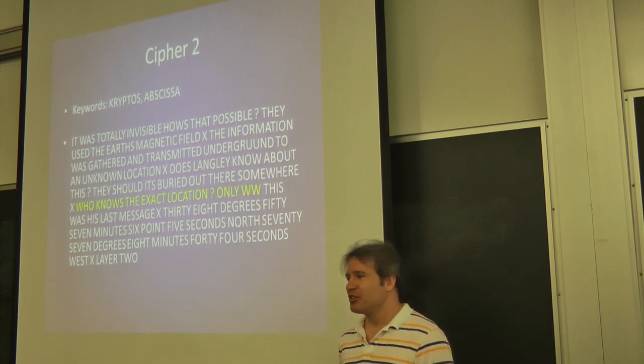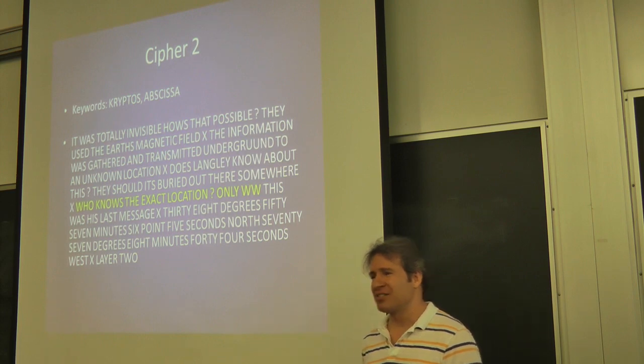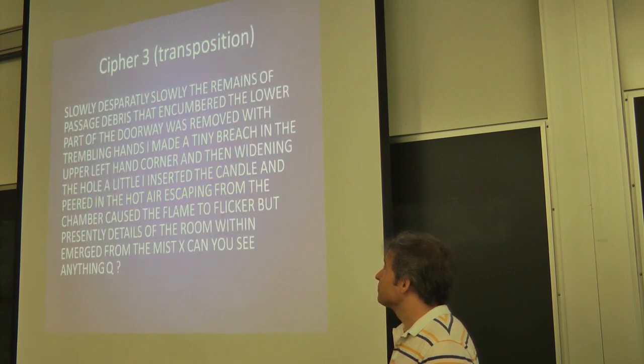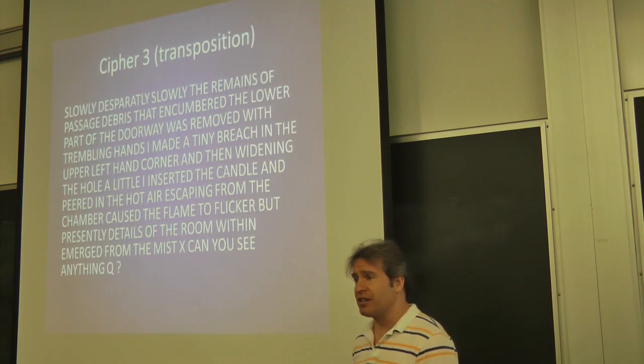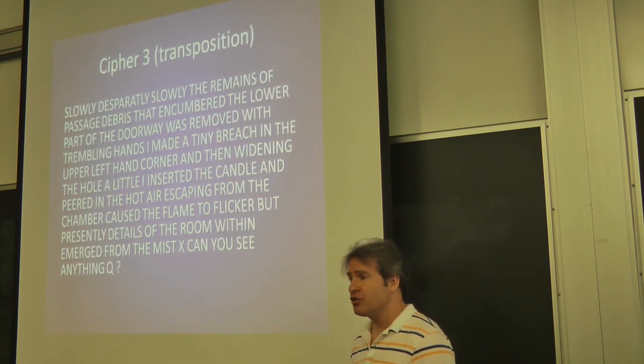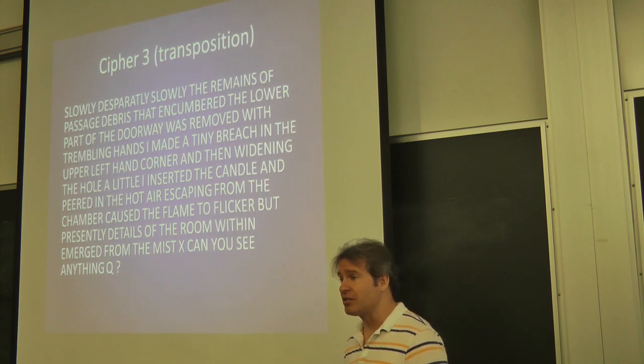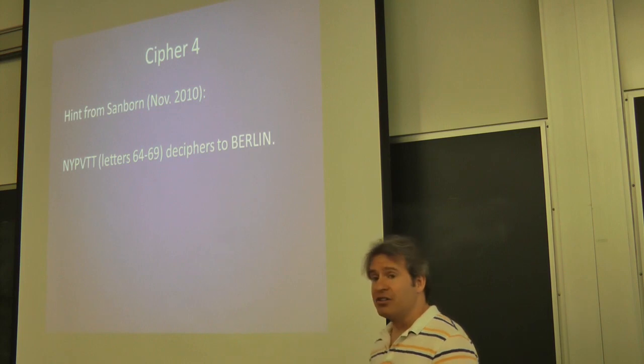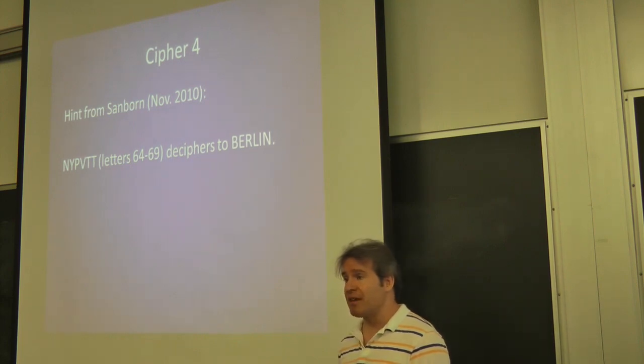He was considering suing Dan Brown, but Dan Brown's got some pretty good lawyers. Anyway, so that's a misinterpretation. The third cipher was transposition. Here's the decipherment. It's just a rearrangement of the letters in the ciphertext, according to a certain rule. But part four is unsolved. Nobody's been able to break that fourth part.